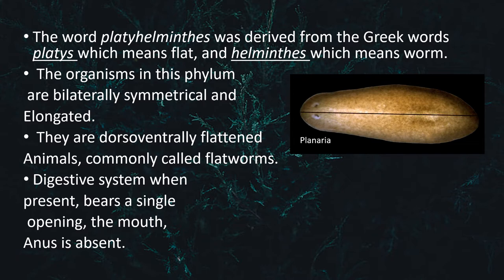This would be the approximate line of symmetry. They are dorsoventrally flattened animals, commonly called flatworms. The term dorsoventrally flattened means that the body is flat from both surfaces — lower and upper.